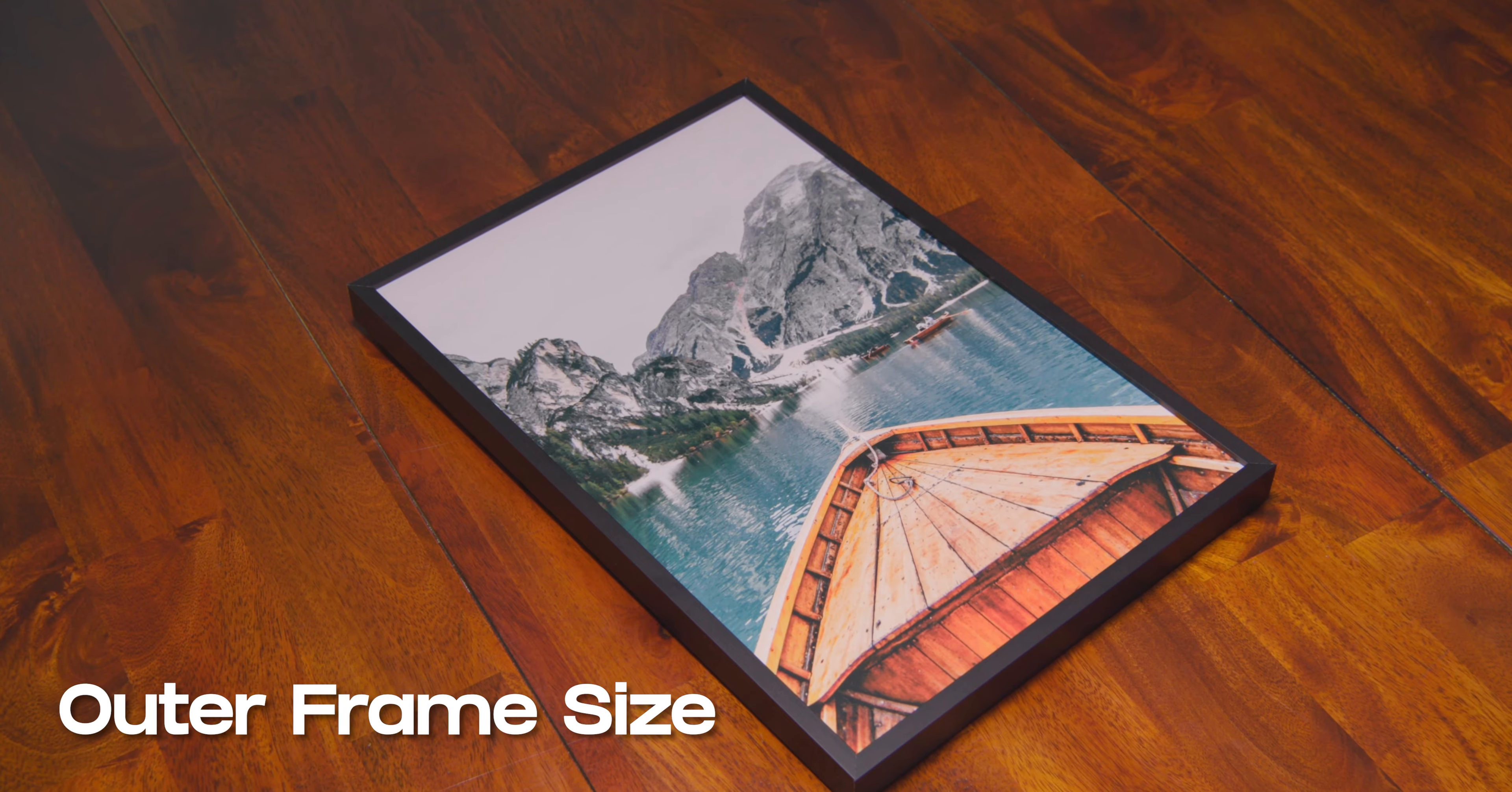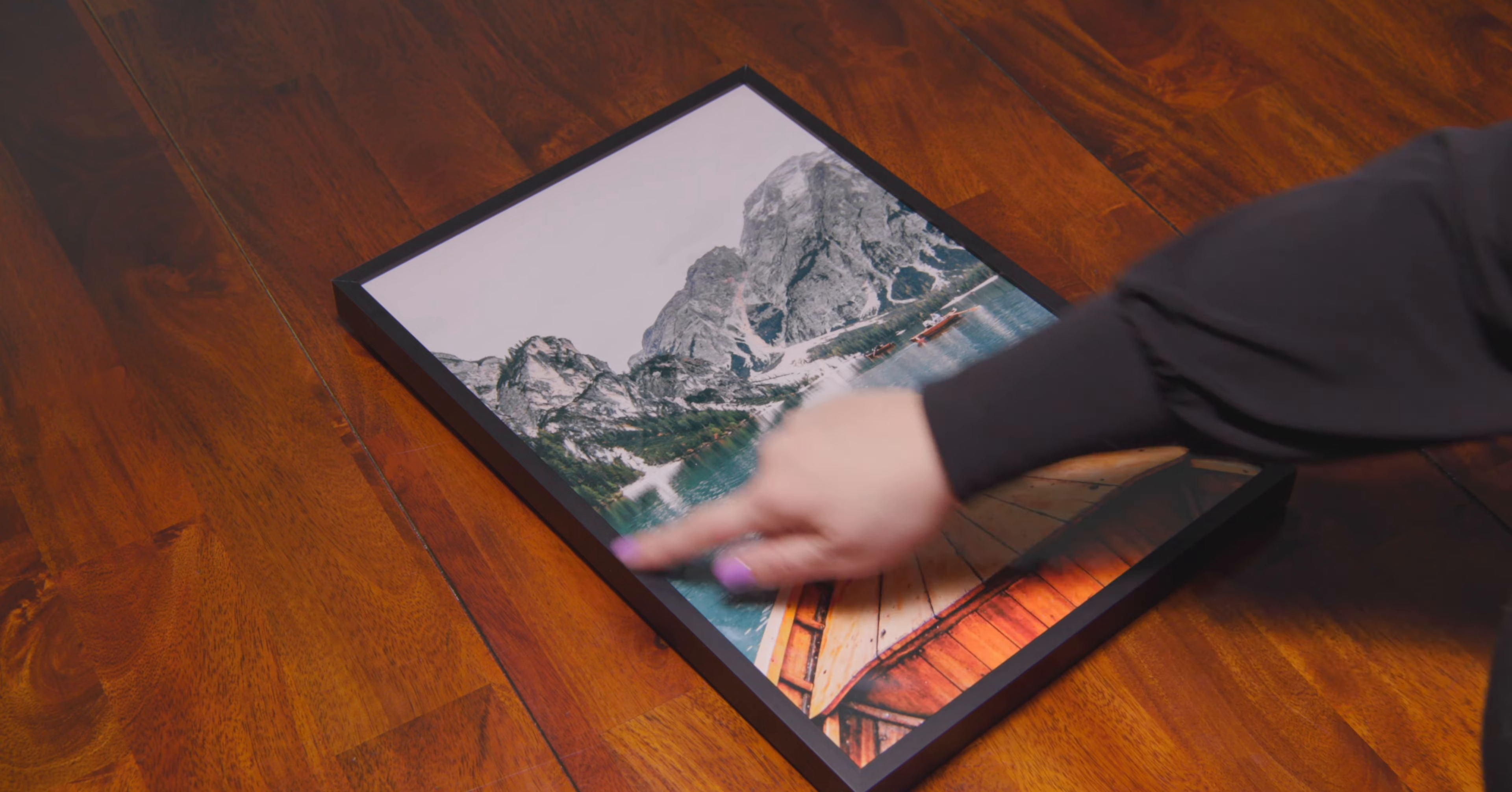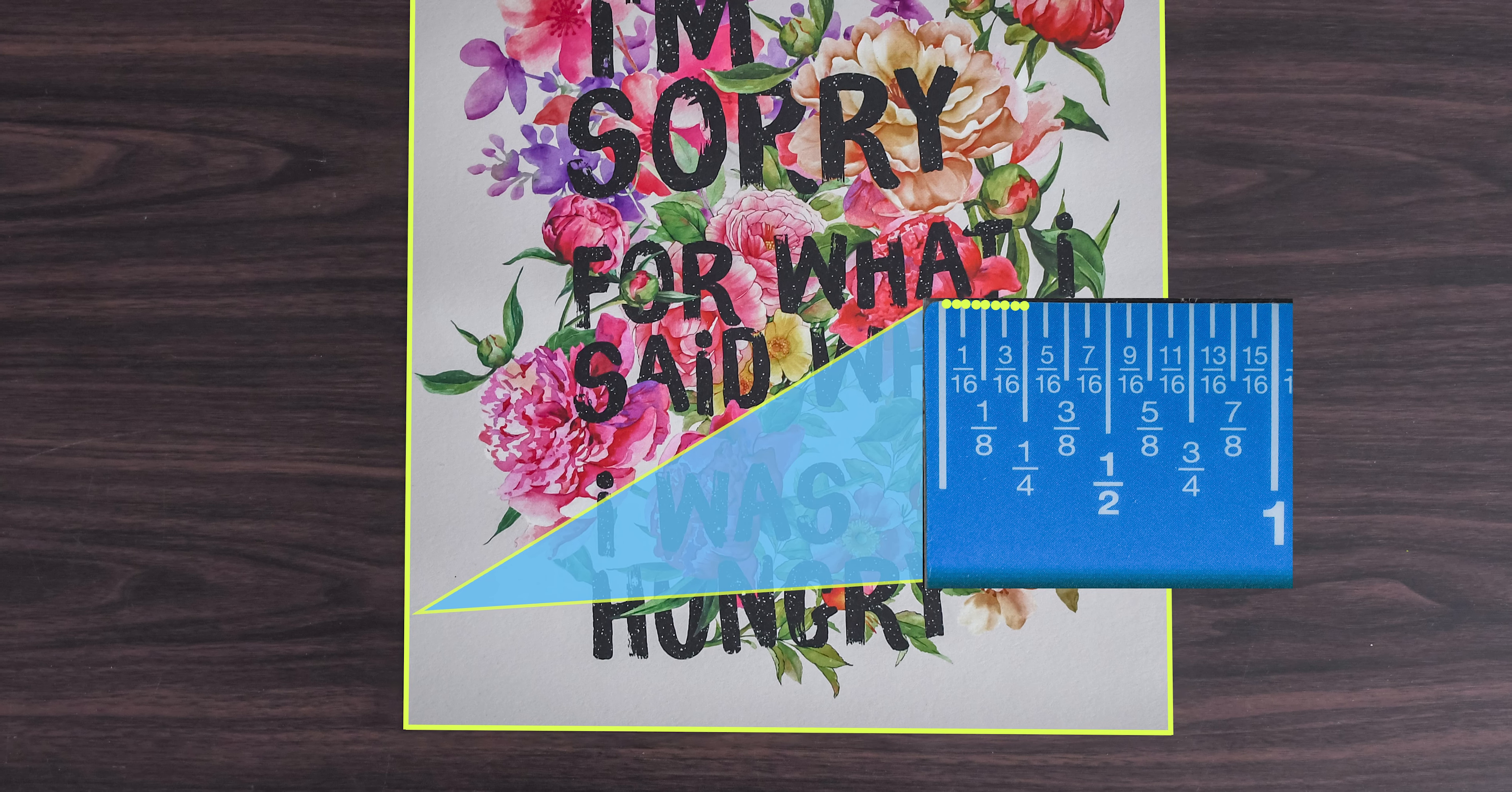Next we have the outer frame size. This is the total size of your frame, including any matting plus the thickness of your frame style - basically how much space it will take up on your wall.